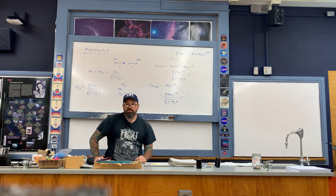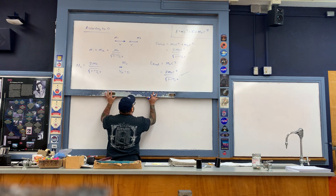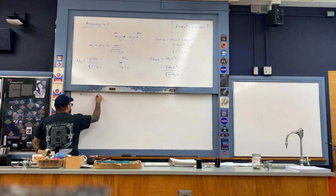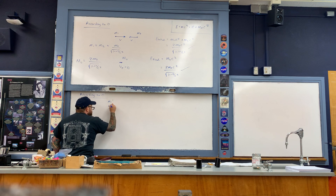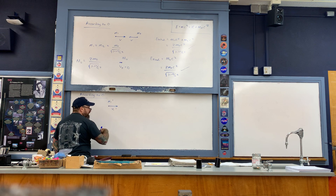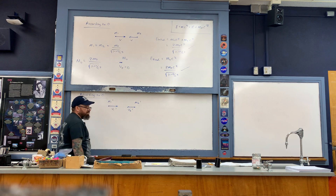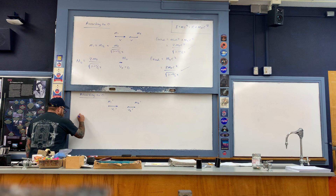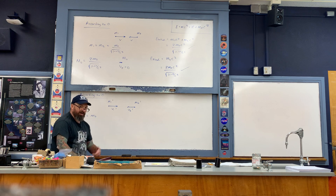Now let's look at the situation according to O prime, the moving observer. According to O prime, we had a relativistic mass m1 prime with velocity v1 prime, and a relativistic mass m2 prime with velocity v2 prime prior to the collision. We calculated that m1 prime was actually just equal to the rest mass m_naught, and m2 prime, through a long calculation skipped in part two, was the following quantity.